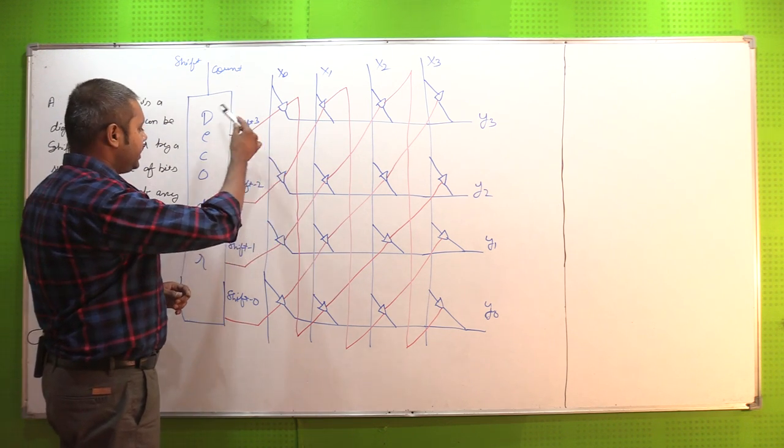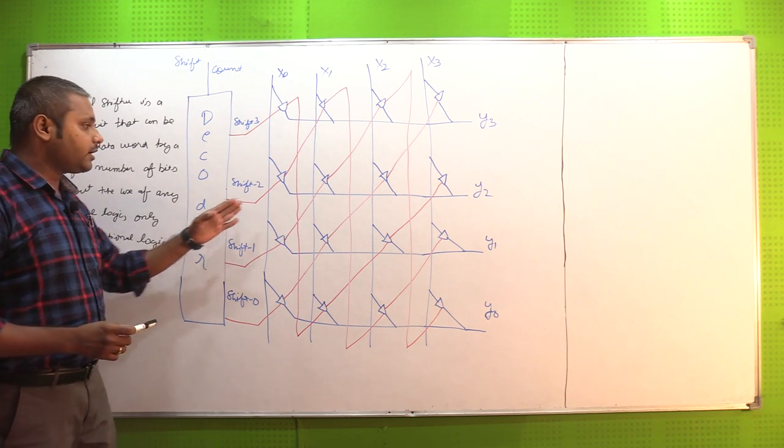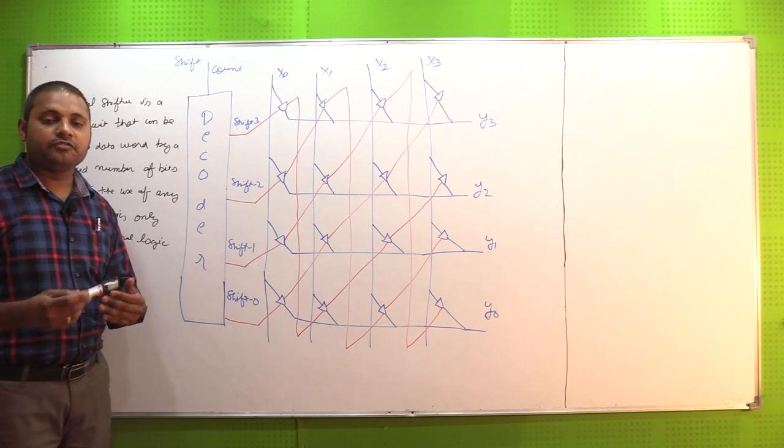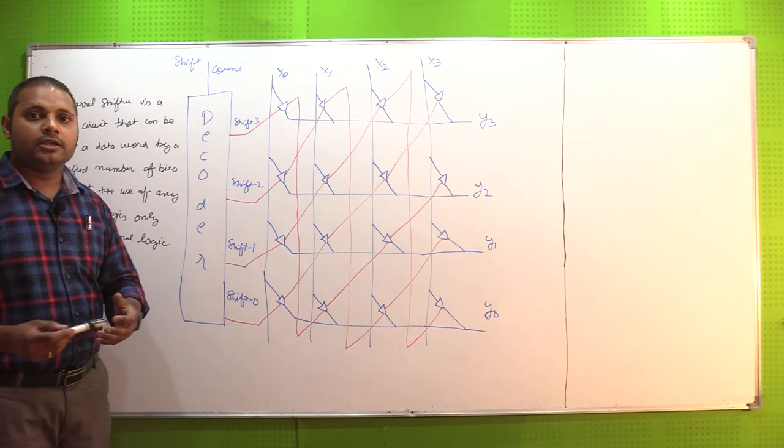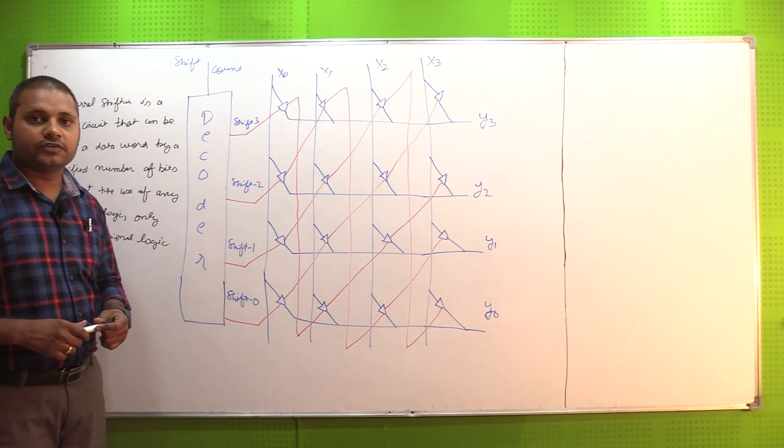In combinational logic, I see here a decoder is used and here a shift count, which is what we are doing, we are doing a shift. Generally barrel shifter is a circuit which shifts a word or a bit, where I need shifting, what I am using, barrel shifter.